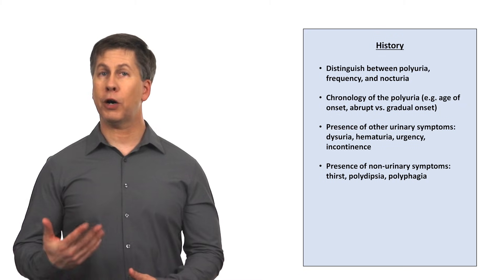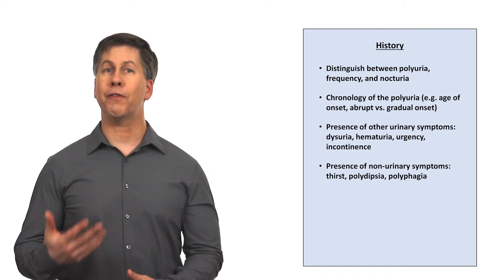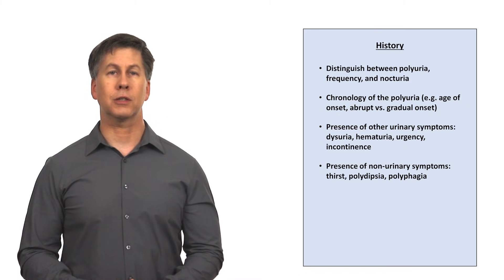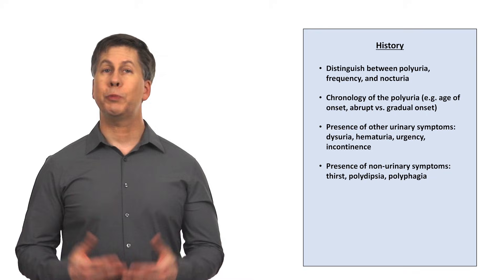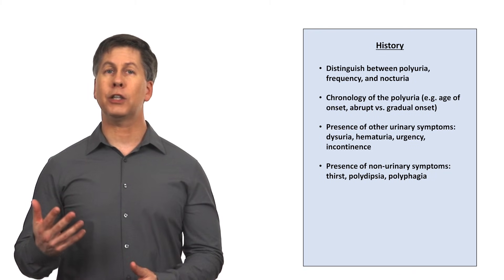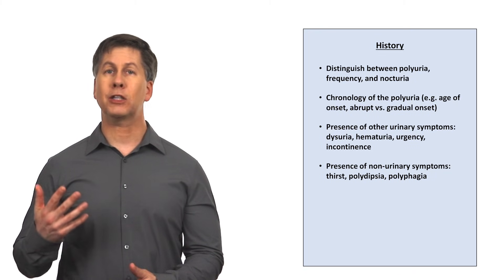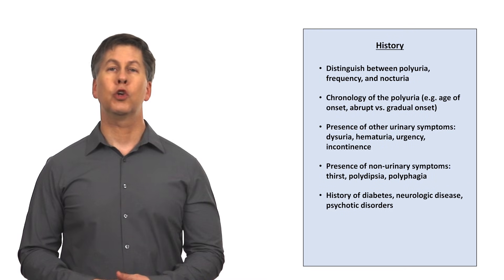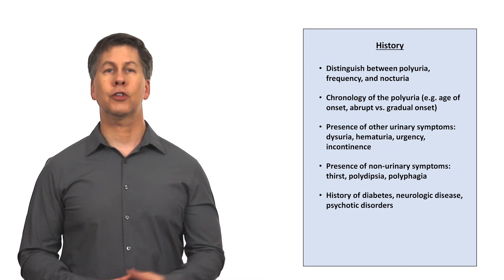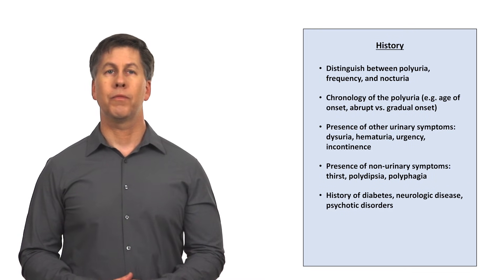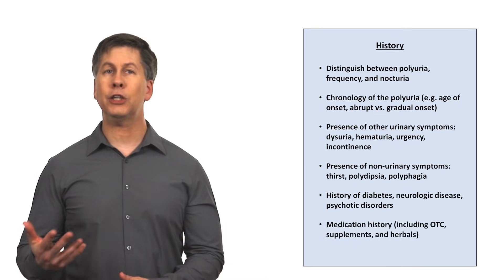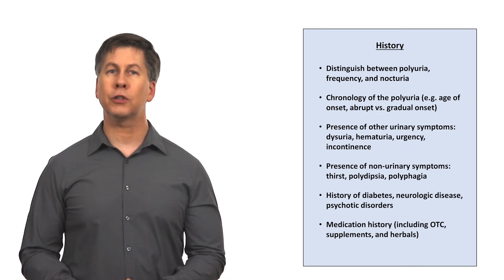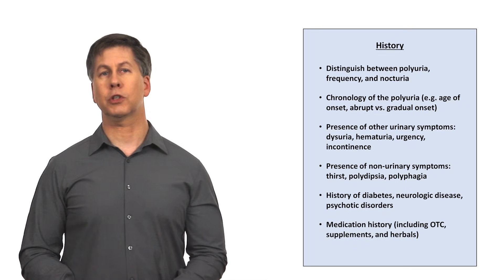The triad of thirst, polyuria, and polyphagia is classic for uncontrolled diabetes. When asking about past medical history, focus on diabetes, neurologic disease, and psychotic disorders. And take a thorough medication history, including over-the-counters, supplements, and herbals.